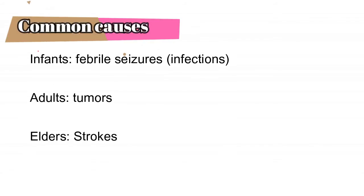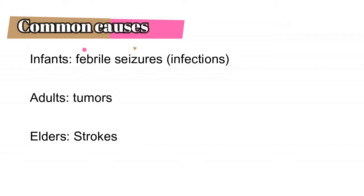When it comes to the most common causes, it's important to know them by age group. For infants, the most common cause is febrile seizure — meaning the temperature is so high it leads to a seizure, usually preceded by infection. For adults, the most common cause is tumors, and for the elderly, it is strokes.